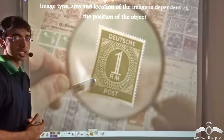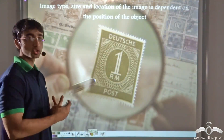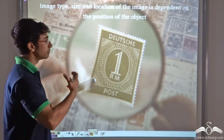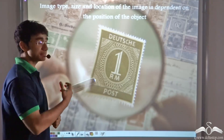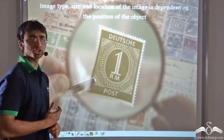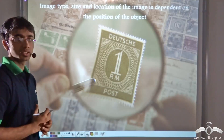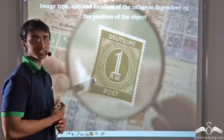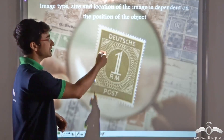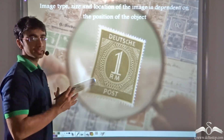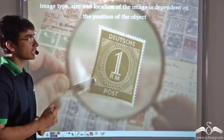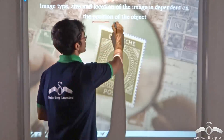Now you will be interested to learn that the same magnifying glass can also be used to see an object in front of us in a bigger manner — it is possible to use the same magnifying glass to magnify objects in front of us. How can we use a magnifying glass to obtain a point image of sun rays and also obtain a magnified image of what's in front of us? We can thus conclude that the image type, size, and location are dependent on the position of the object.